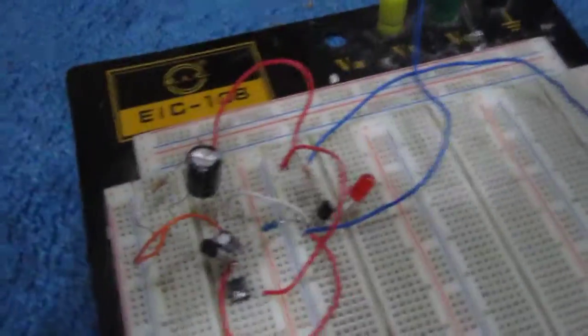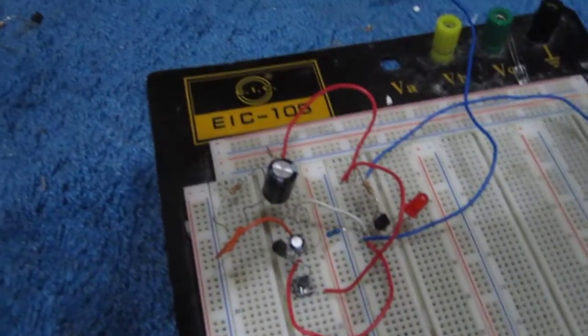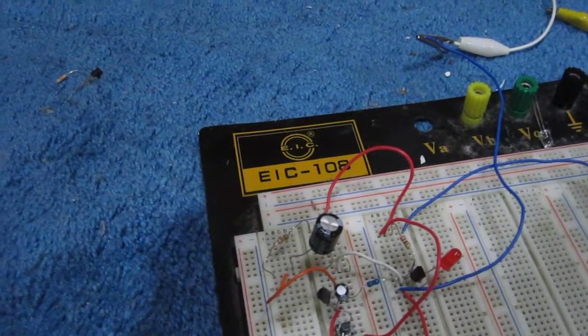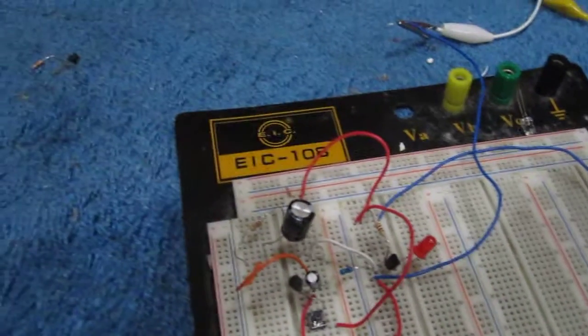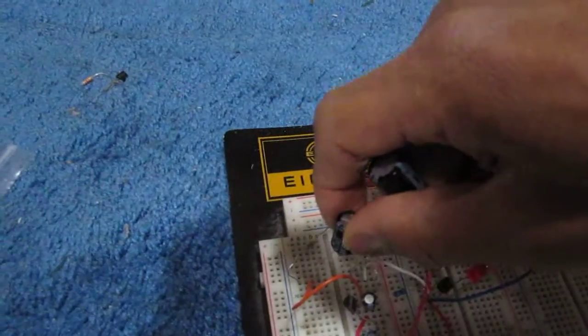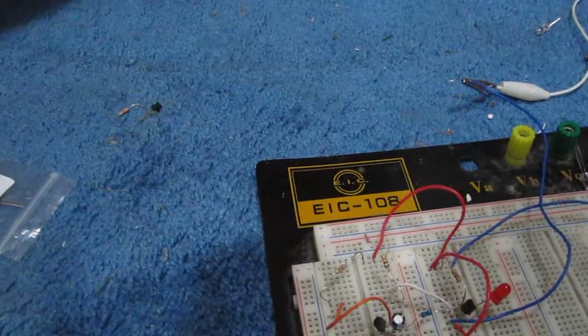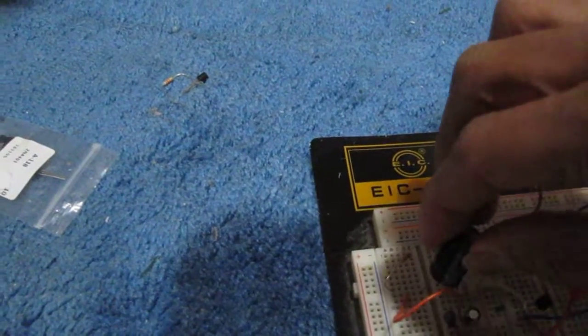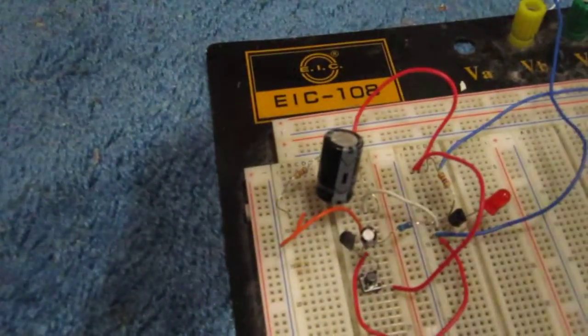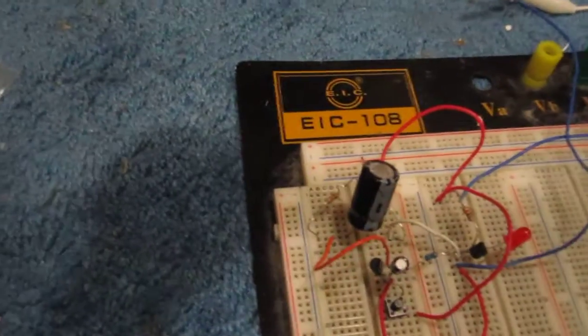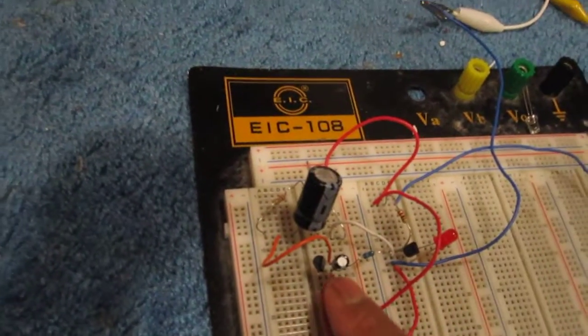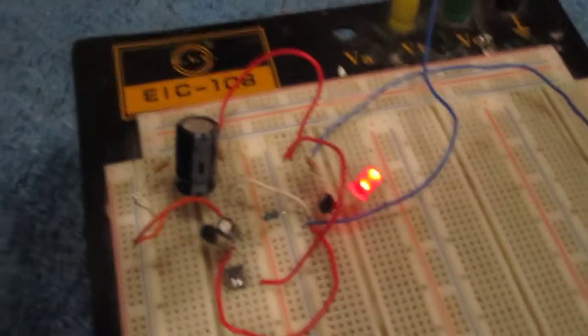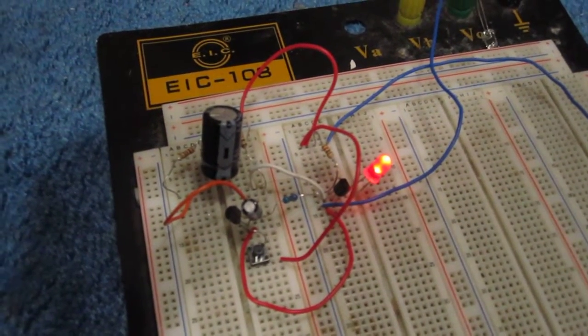Now if I wanted the LED to stay on longer, I could use a larger capacitor value. So again, right now a 470 microfarad capacitor is being used. If I take out this capacitor and replace it with a much larger capacitor, this one is 3,300 microfarads. Now if I press the push button, the LED will be on for a much longer period of time.